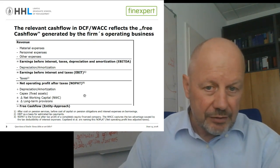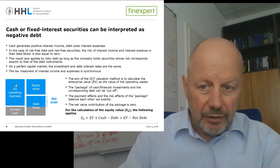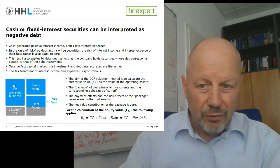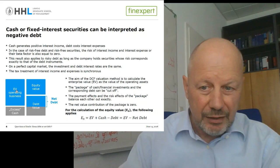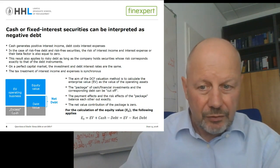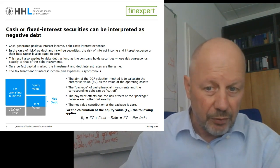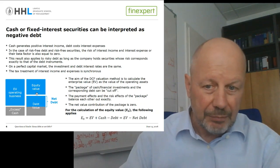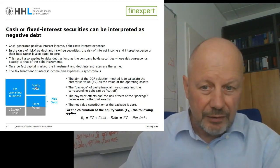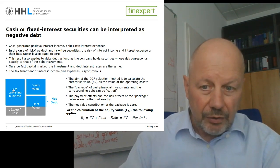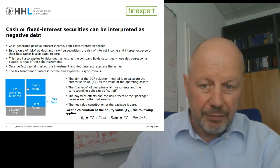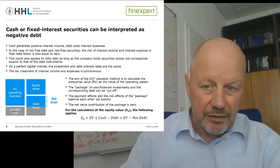That already answers our question, because by discounting the free cash flow with the WACC, we calculate the operating enterprise value of our business. If we add our cash position, the sum of the two would be the firm value. On the right-hand side, you see our capital structure in market values — the value of equity and the value of debt. And the corresponding liability side for the enterprise value is reflecting the net debt, that is the difference between the gross debt and the excess cash.